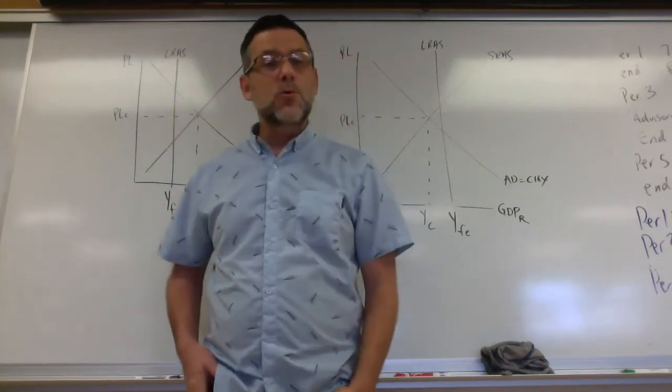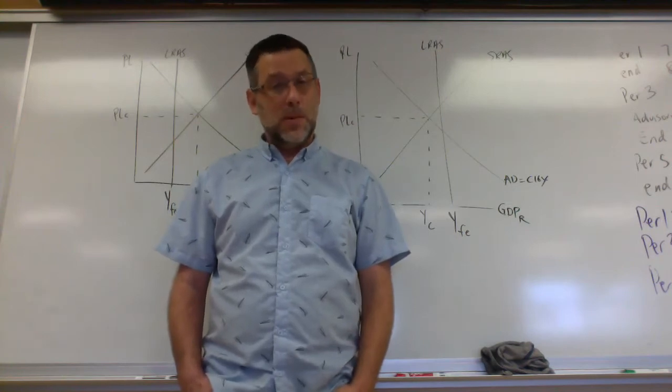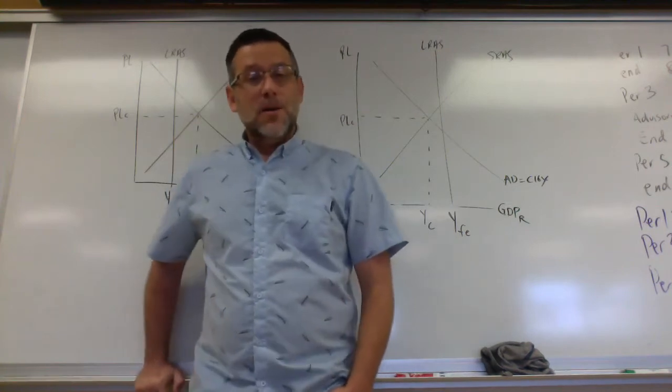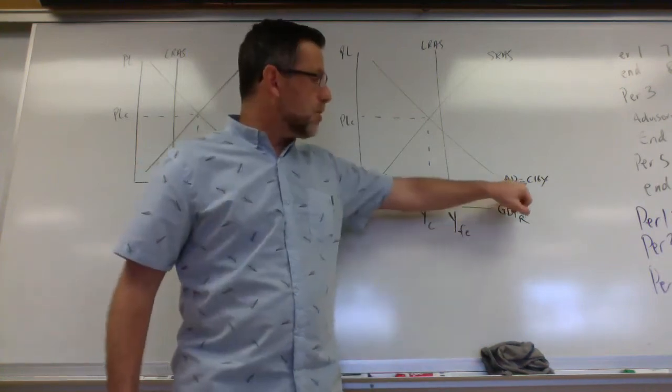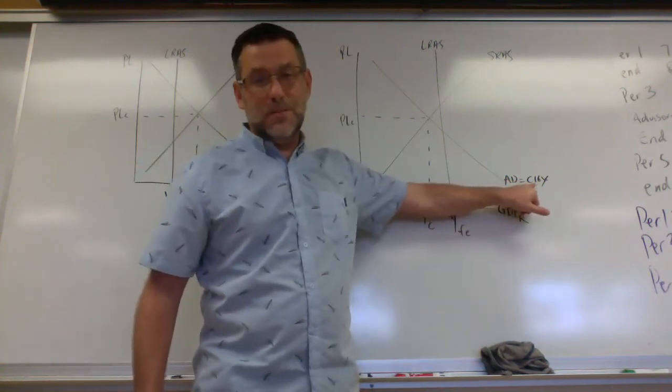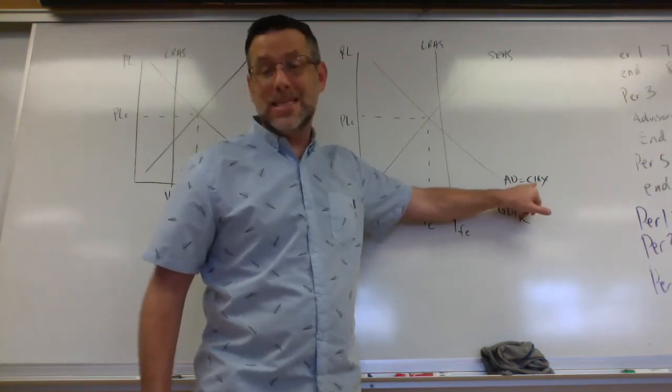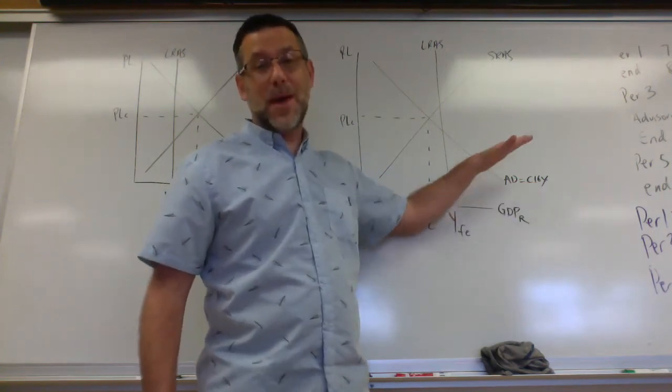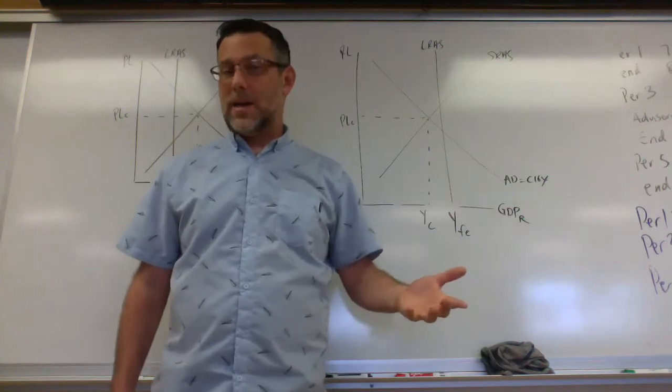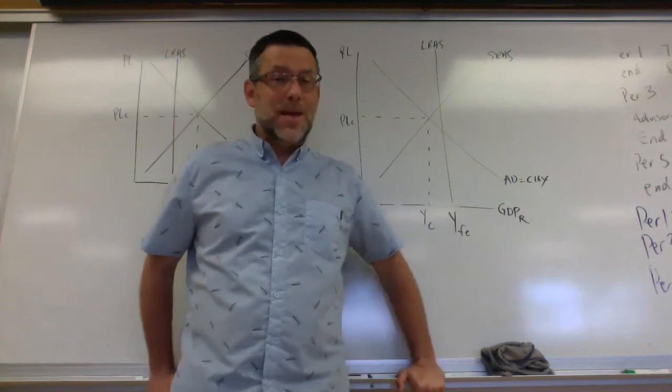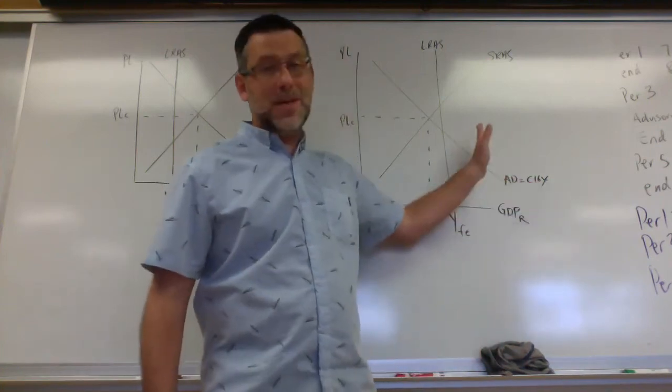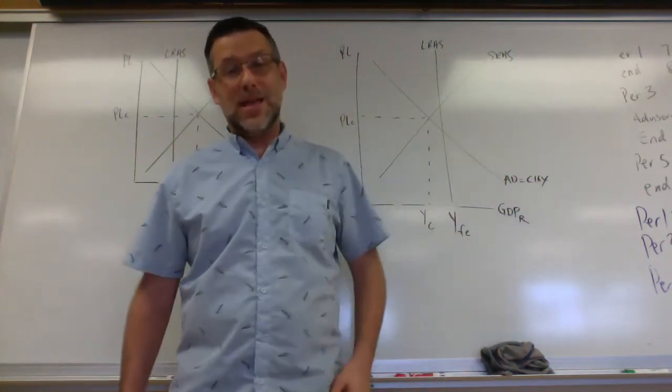There's two ways the government can do that in fiscal policy. First of all, if the government was to lower taxes, that would mean more spending by consumers and businesses. The C and I in C+I+G+Xn would go up. So aggregate demand would go up. So we can cut taxes or we can increase government spending because when we increase government spending, that means more G, that means aggregate demand increases, closes that gap.